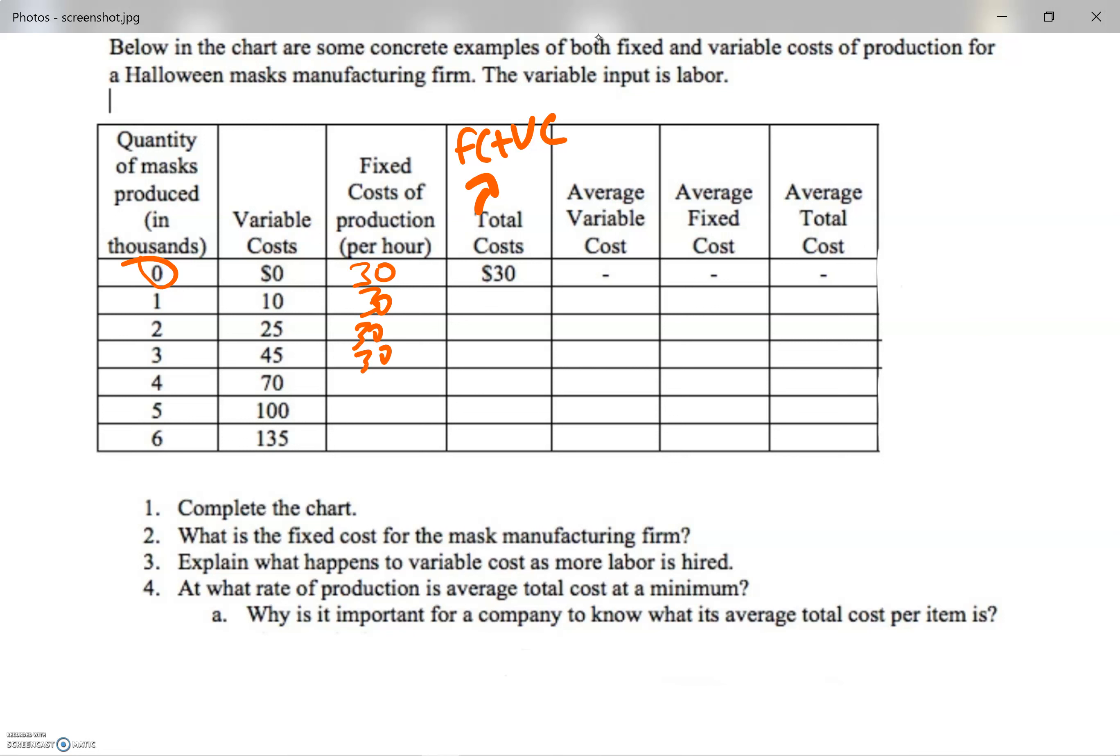Total cost, I will just need to add. So they gave me the first one. What I will be doing for the second: 10 plus 30 is 40, 25 plus 30 is 55, 75, 100, 130, and 165.